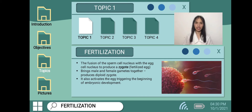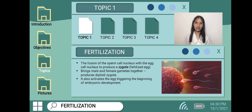Good day everyone. I am Maria Salvarina and now I am going to discuss fertilization and its journey. Fertilization is the fusion of the sperm cell nucleus with the egg cell nucleus to produce a zygote or fertilized egg. It brings millions of gametes together to produce a zygote — the union of the egg and the sperm — resulting in the production of a single cell called the zygote.